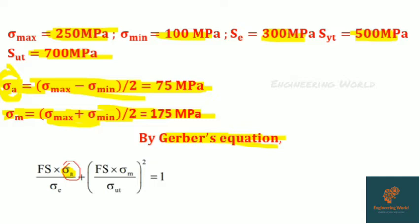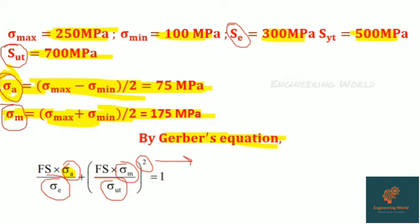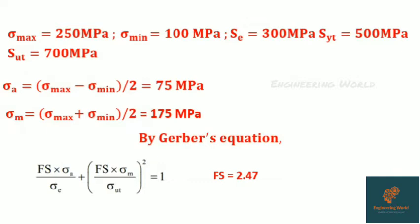This is the formula. By putting all values in this formula, we get the factor. Remember, this is an important point: there is a square here, and we take factor of safety also as a square. So we get factor of safety 2.47. This is an important question; please note this.